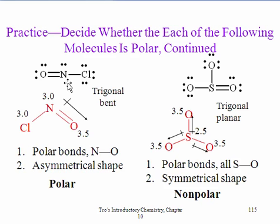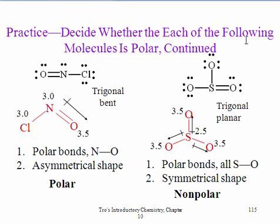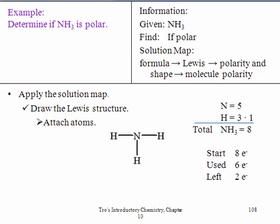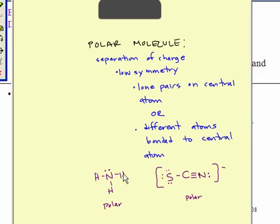If we look at our central atom, it has lone pairs and it's bonded to two different elements, so this is definitely going to be polar. If we look at this other central atom, even though we have a double bond, there are no lone pairs and it is bonded to the same element — so therefore this is nonpolar. Really, all you have to do is look to see if there are lone pairs on the central atom or if the central atom is bonded to different elements. If that's the case, it's going to be polar; if not, it's going to be nonpolar.